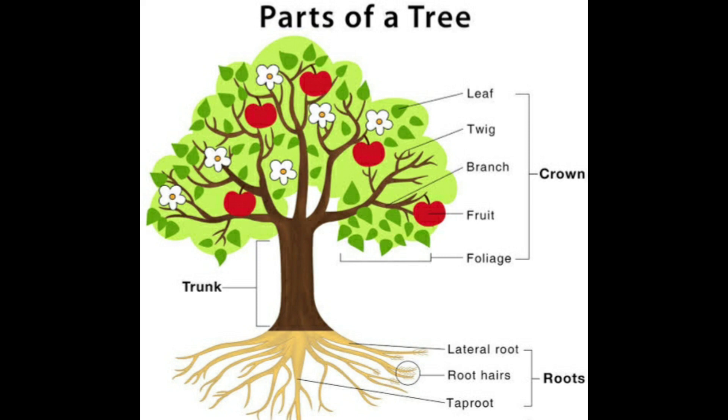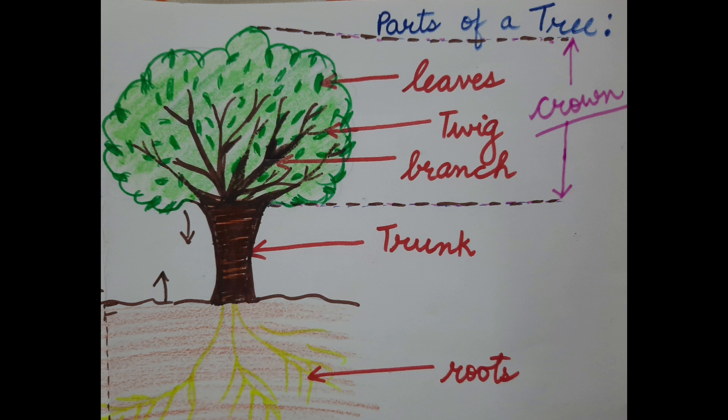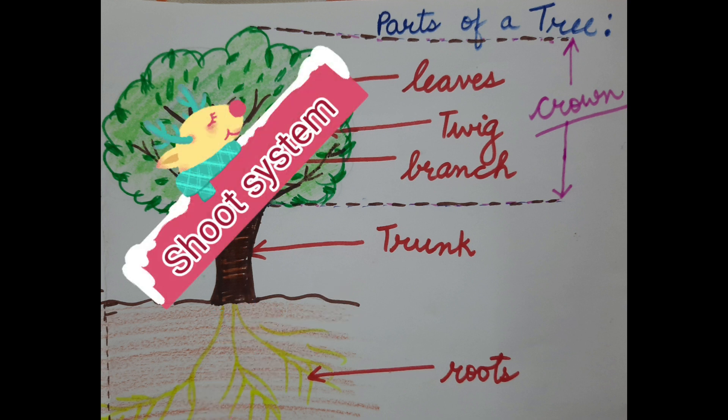The root system contains all those parts of the plant which are in the ground, underground. And the shoot system contains all those parts of the plant which we can see above the ground.